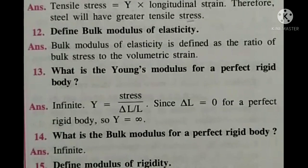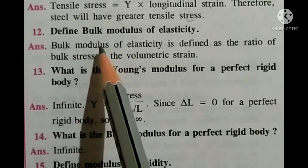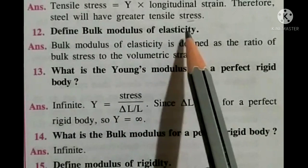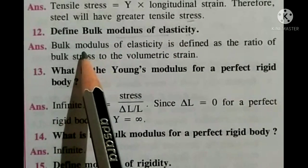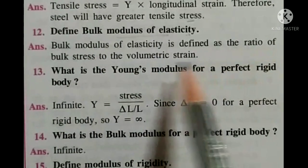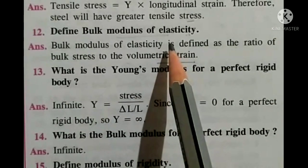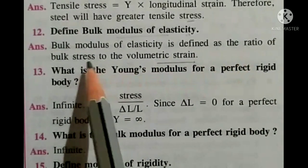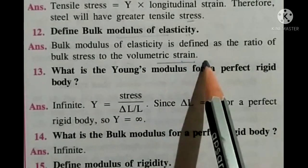Question number twelve: define bulk modulus of elasticity. Bulk modulus of elasticity is defined as the ratio of bulk stress to volumetric strain.